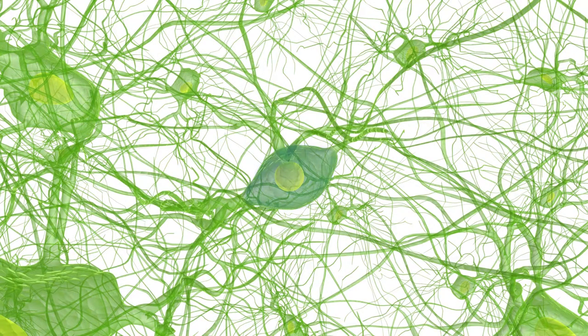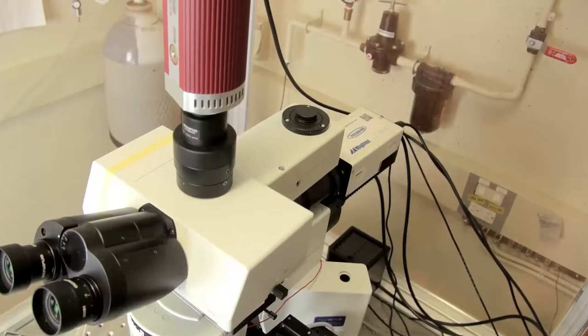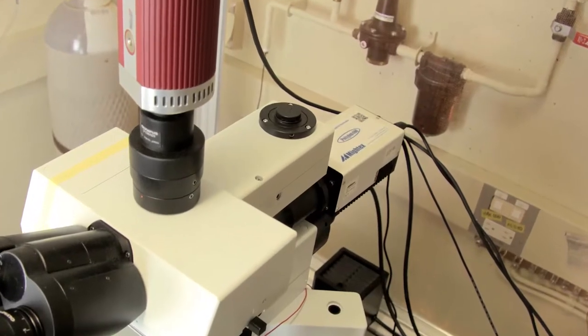But you can only do this if you can somehow stimulate individual cells at specific points and times. And this is what we use the Polygon 400 pattern illuminator for. We go and we do our recordings in a cell that's receiving a bunch of inputs. And those inputs we drive with the Polygon by identifying particular cells and then activating them in different patterns.